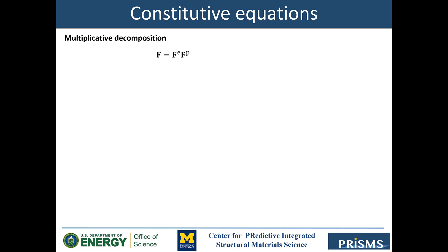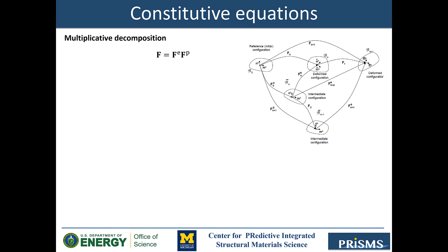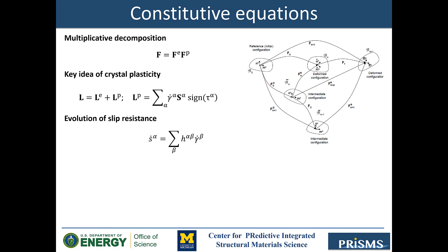Here is a quick view of the kinematics and constitutive models. The first equation is the multiplicative decomposition of the deformation gradient tensor. The finite deformation continuum mechanics framework is adopted for Prism's Plasticity. The kinematics of single crystal slip is illustrated in the figure, in which two independent deformation mechanisms — elastic distortion of the crystal lattice and pure shear as a result of plastic slip — accommodate the applied deformation. The macroscopic velocity gradient tensor L can be additively decomposed into elastic and plastic components L_E and L_P. The key idea of crystal plasticity is to link the plastic part of the velocity gradient tensor to the superposition of shear deformation induced by crystallographic slip on multiple slip systems as microscopic mechanisms of deformation. The evolution of slip resistance for slip system alpha represents isotropic hardening.